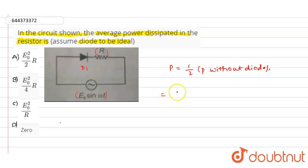So we can write half into E naught divided by square root 2, whole square, divided by capital R. So this is the value of the power without the diode. So that will be equals to half, sorry, one by four into E naught square divided by capital R.